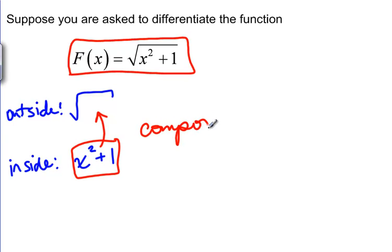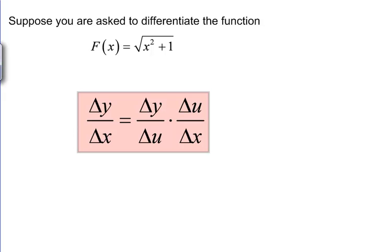Now the question is, how do we take the derivative of two functions that are being composed? Well, we're going to look at our derivative as a slope again — we're going to think of it as a change in Y over change in X. We're going to notice that we can break this down into change in Y over change in U times change in U over change in X, for some other function U.